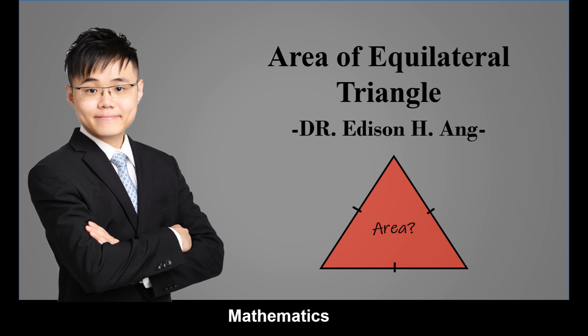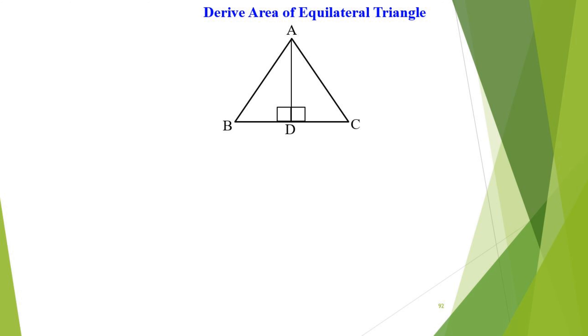So, how do you derive the area of an equilateral triangle? An equilateral triangle consists of two right angle triangles. Let's label this equilateral triangle as ABC.